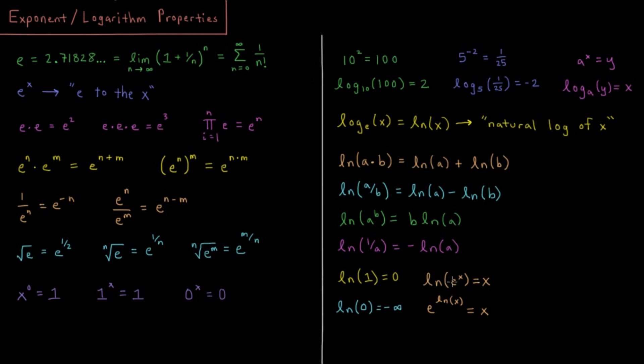And the natural log of e to the x, if we see by this rule, we can pull the x out and then we have the natural log of e. So the log base e of e is just going to be 1. So natural log of e to the x is equal to x. Those are inverse operations that cancel each other out.